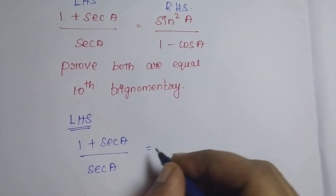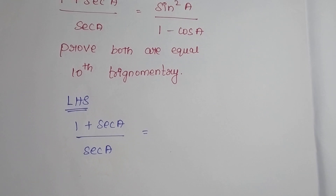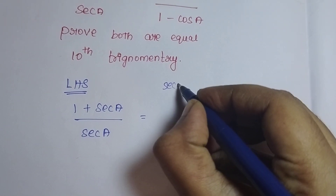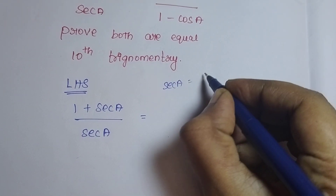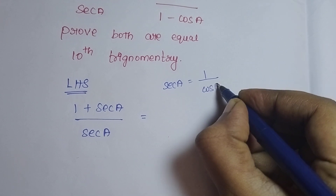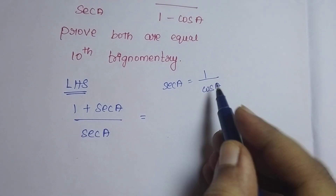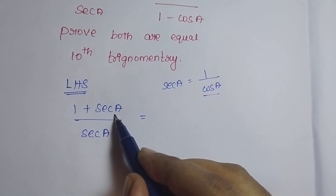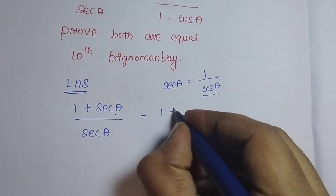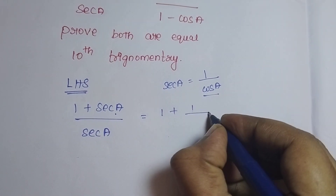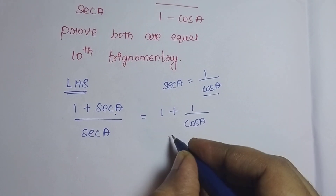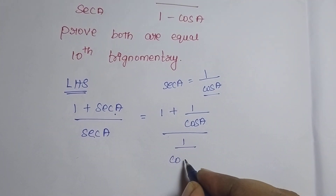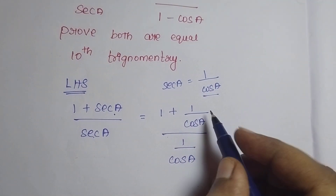Which is equal to — we know that secant A is equal to 1 divided by cos A. So I am going to apply this in the place of secant A. Therefore, 1 plus 1 divided by cos A, whole divided by 1 divided by cos A.